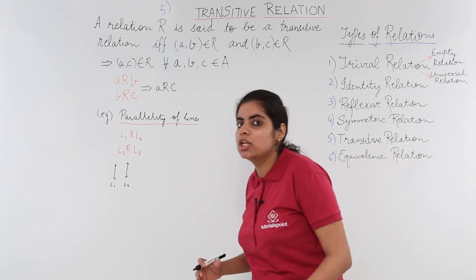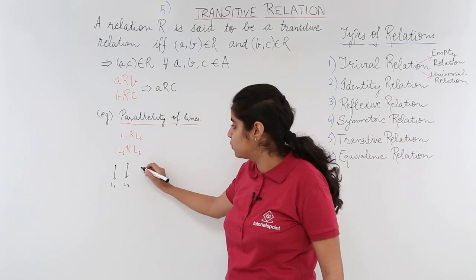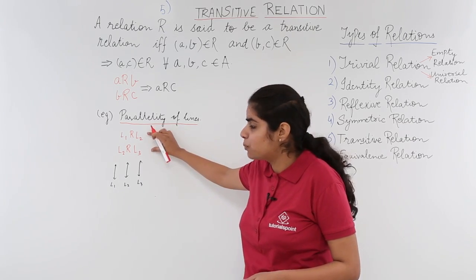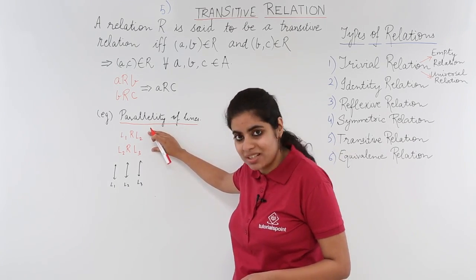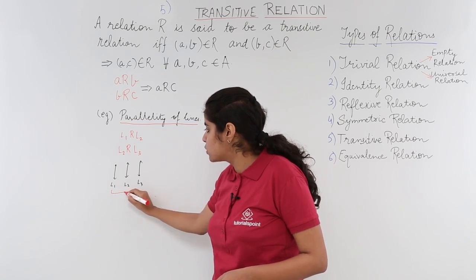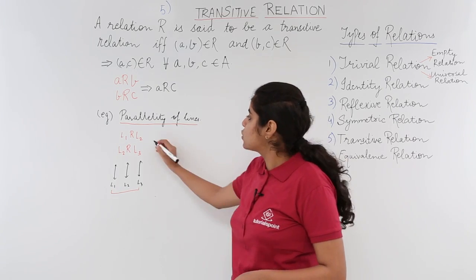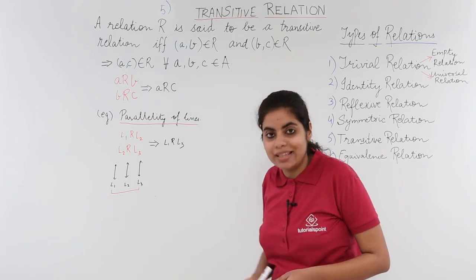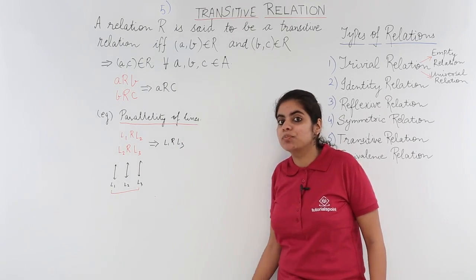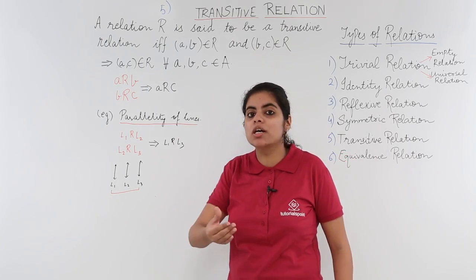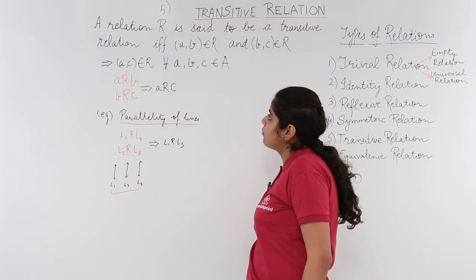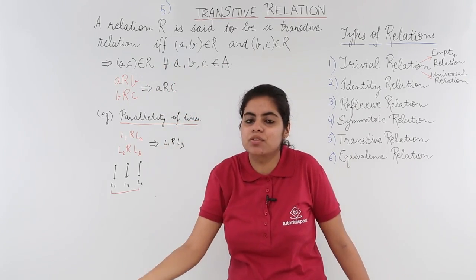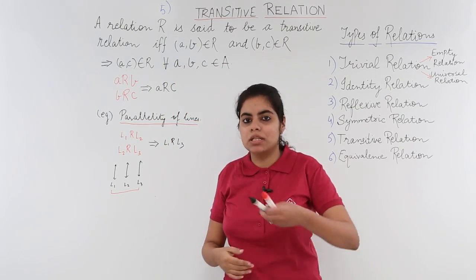So if L1 is parallel to L2, and L2 is parallel to L3, does that not mean that L1 and L3 are also parallel? That means a relation is inferred from them. So I infer from these two statements that L1 is related to L3. This means parallelism of lines is a transitive relation because it follows the definition: if A and B are related, and B and C are related, then A and C related gives a transitive relation.